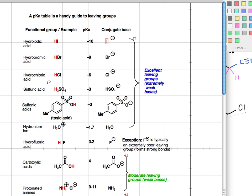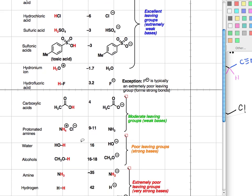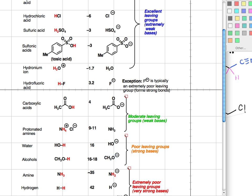So the choice between SCH3 minus and OTs, again we could consult our leaving group table, and that would tell us that up here we have sulfonic acids. This is tosic acid and the pKa of tosic acid is about minus three, which means that the conjugate base of tosic acid is a very very weak base, not quite as weak as Cl minus or Br minus but a considerably weaker base. We don't have thiols on here, but thiols are around 12, so they're in between protonated amines and water. They're actually weaker bases than deprotonated alkoxides. This would mean that OTs is going to be our better leaving group.